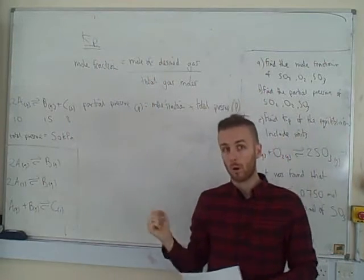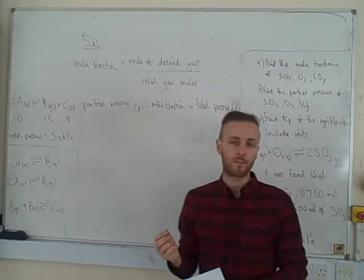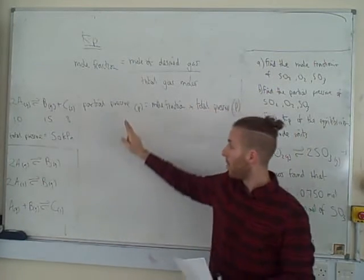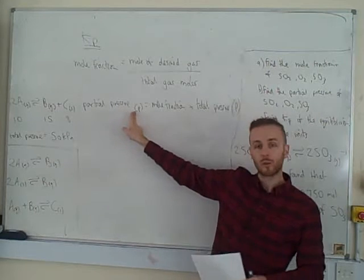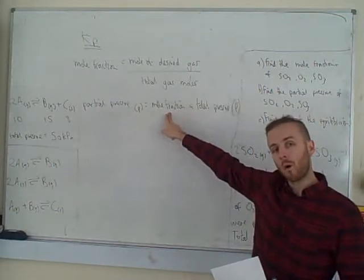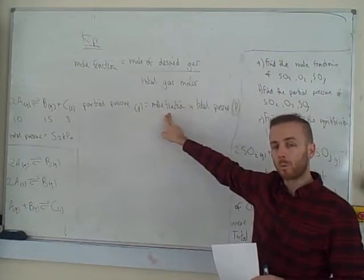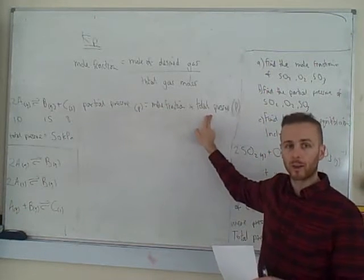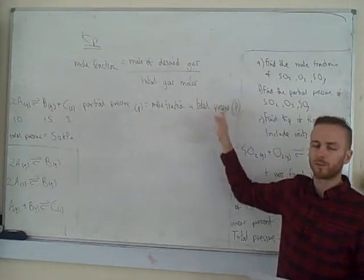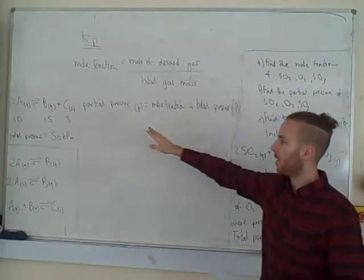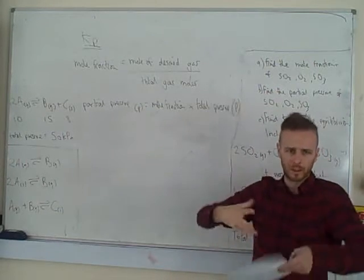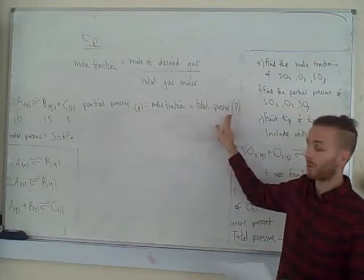Once you've got your mole fraction, you can use it to find the partial pressure of that gas. Partial pressure has the symbol small p, and you find it by taking the mole fraction and multiplying by the total pressure, which has the symbol large P. Total pressure is always bigger, hence the larger P.